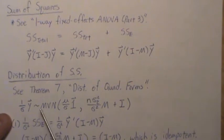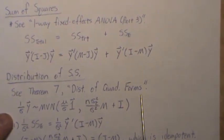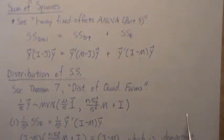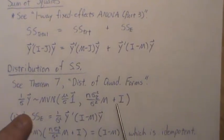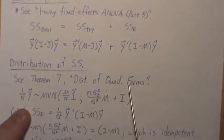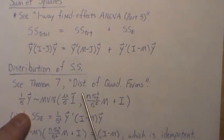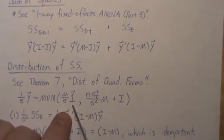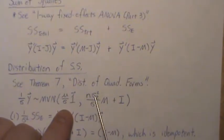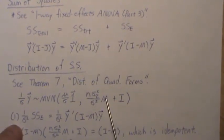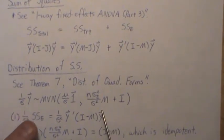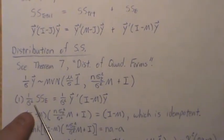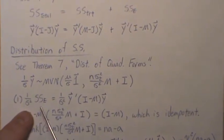For the distribution, I have a video called 'The Distribution of Quadratic Forms' — see Theorem 7 in that playlist, which covers parts 1, 2, and 3. Theorem 7 deals with a random vector having a mean and a variance-covariance matrix, and gives the distribution of the associated quadratic form. So if we look at the distribution of (1/σ²) times the sum of squares for error...